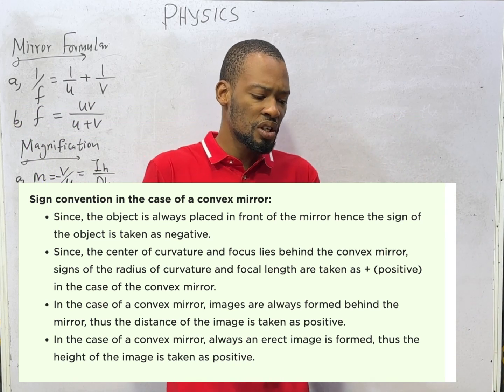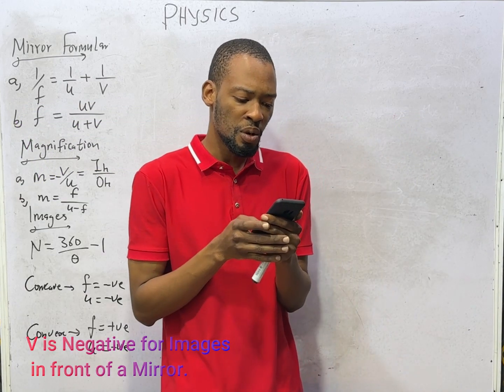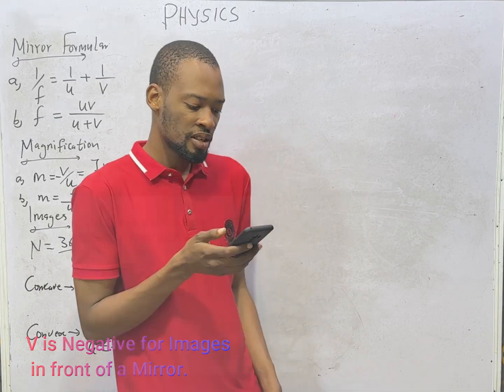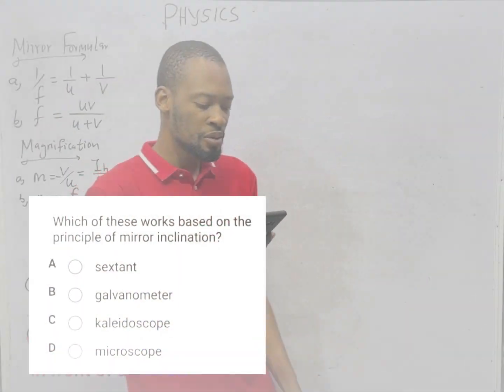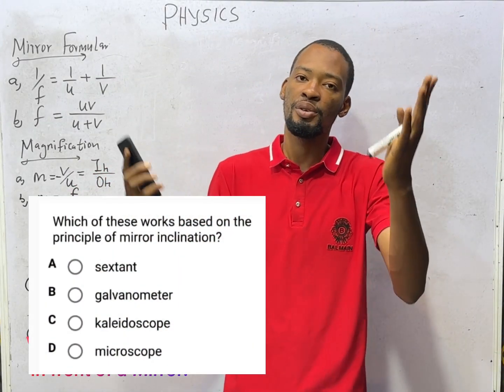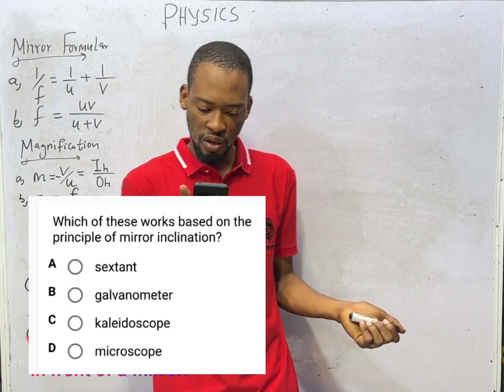Which of these works based on the principle of mirror inclination? That is the kaleidoscope — it works based on inclining mirrors at various angles.